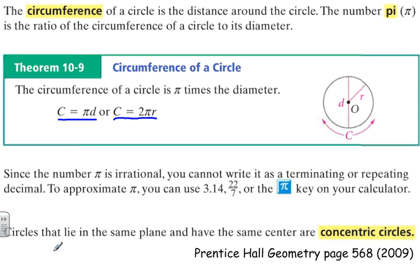Circles that lie in the same plane have the same center are concentric circles. The idea of concentric circles is important in this next example.